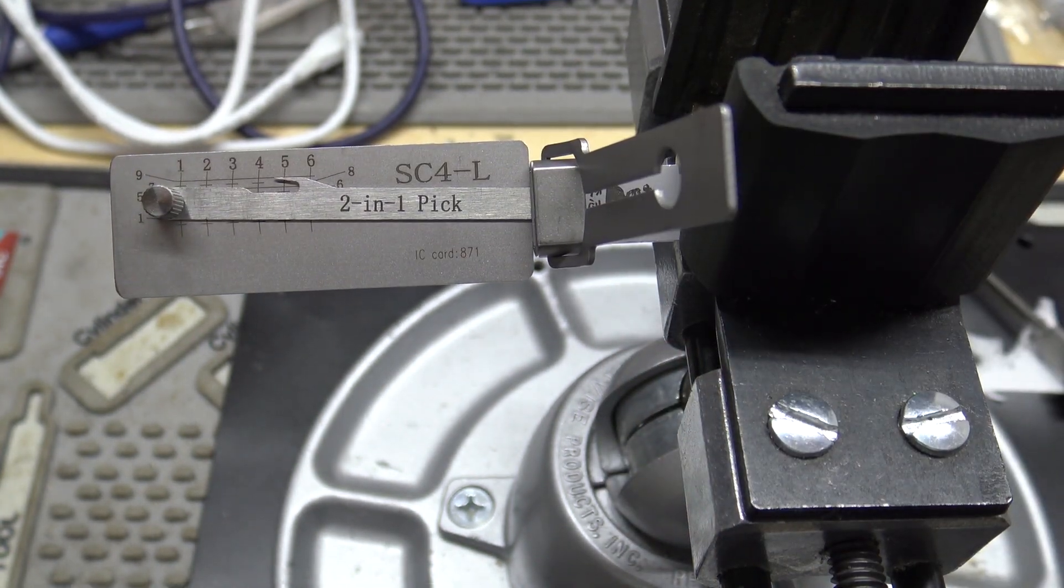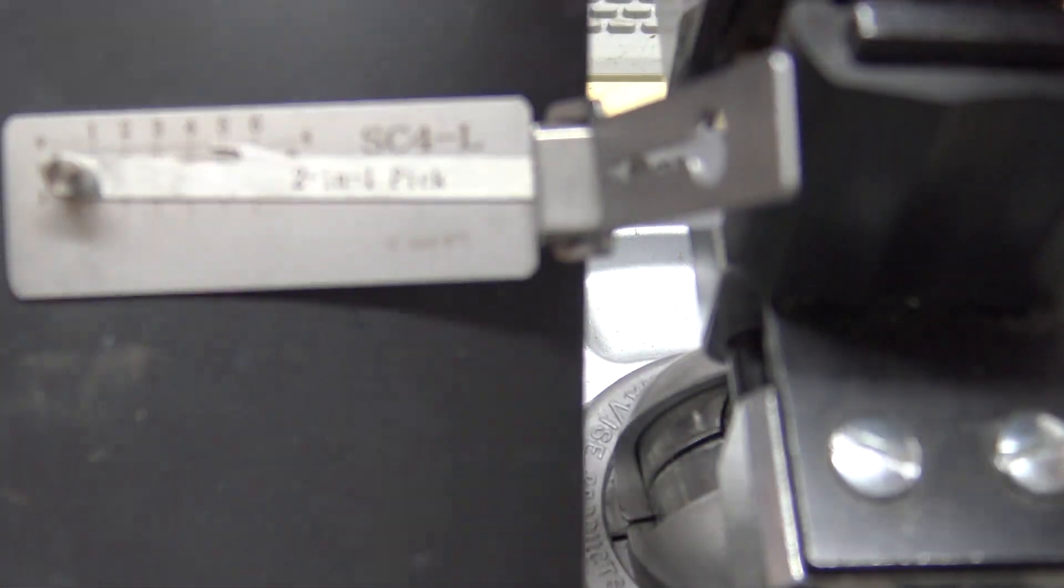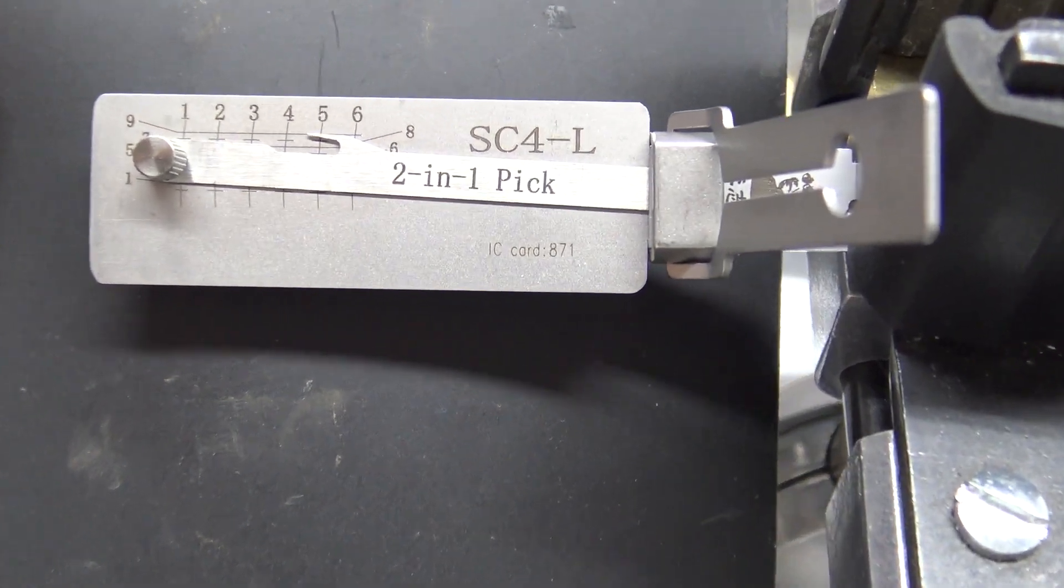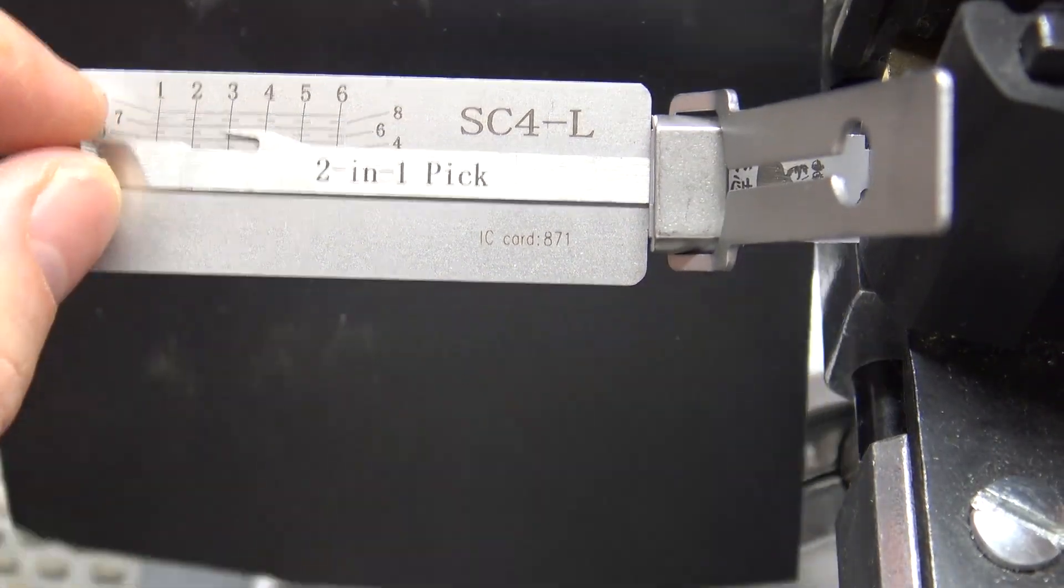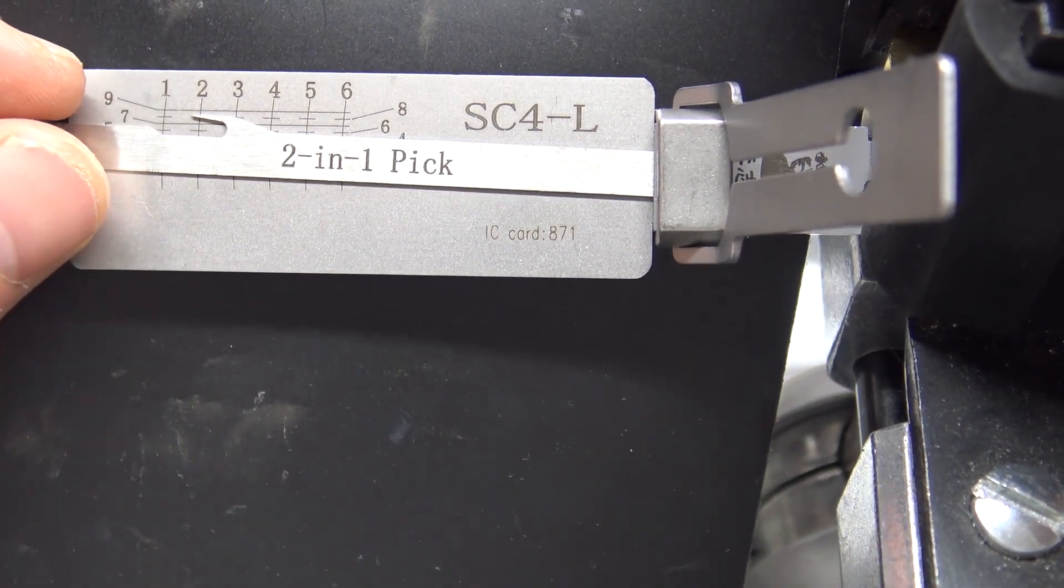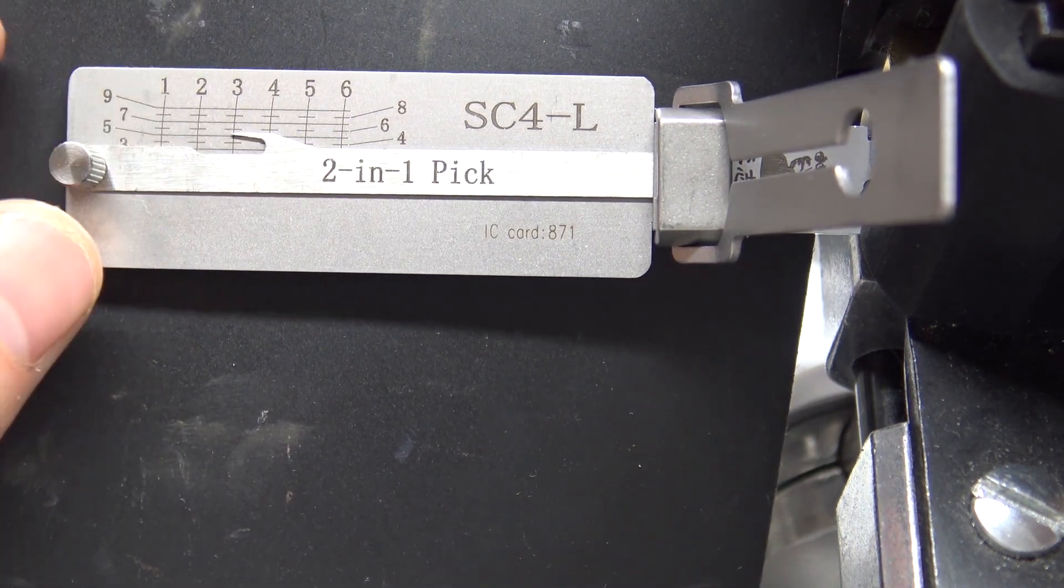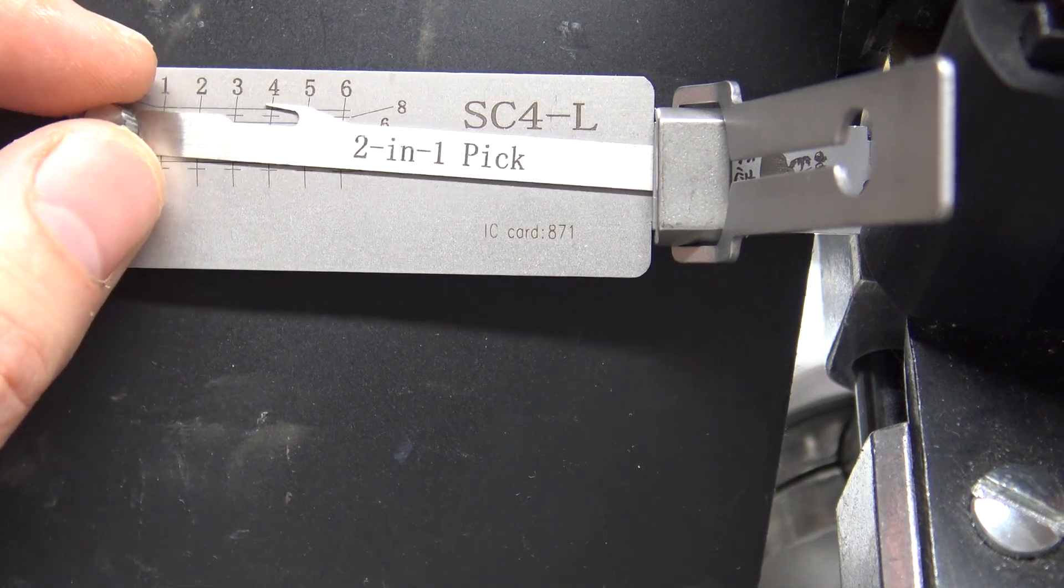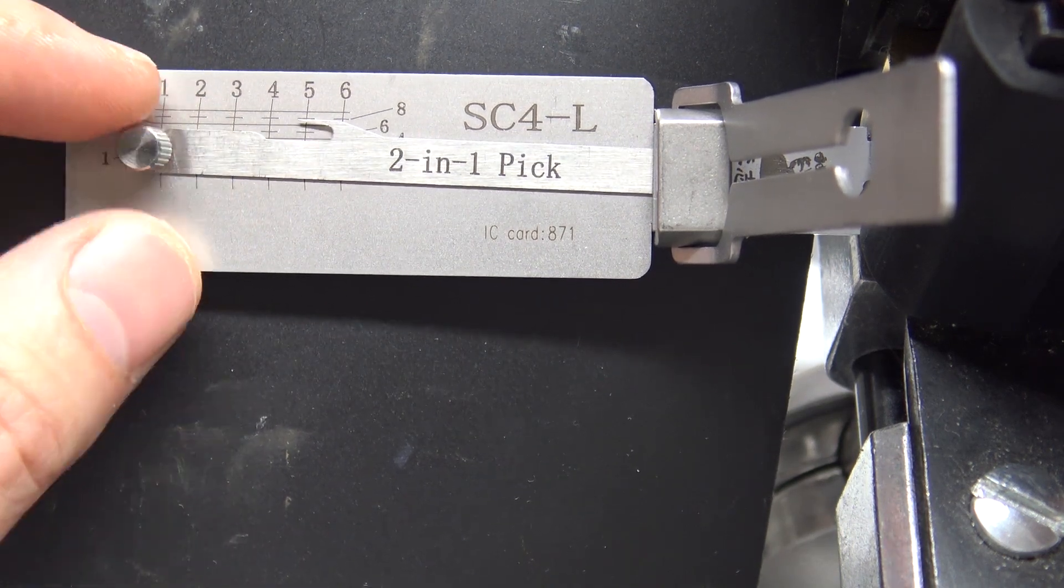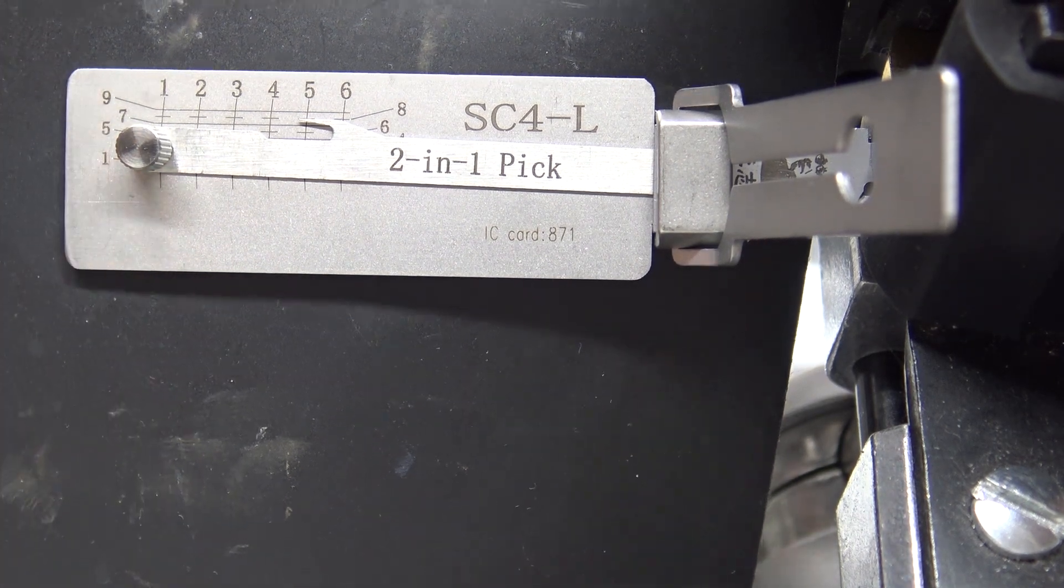And from here, you'd be able to actually decode the lock if you wanted to, just like all the other awesome Lishi tools. That's the first time I've ever actually used a Lishi left-handed here. So it looks like this lock here, we've got one, and that's four, five, three, and looks like a seven. So that'd be the bitting on it.